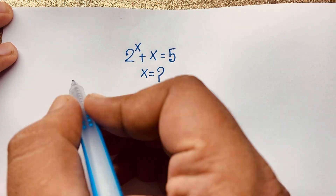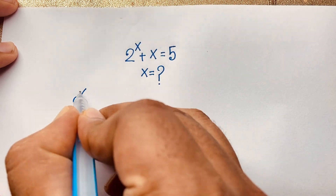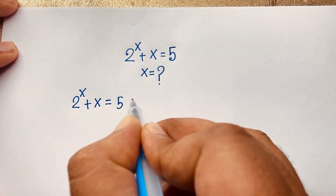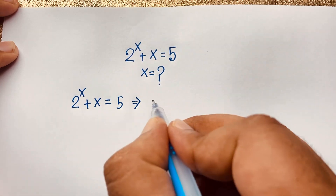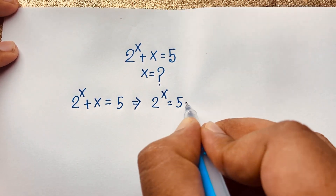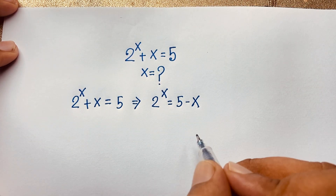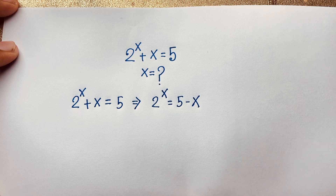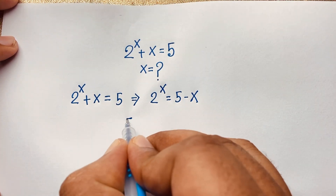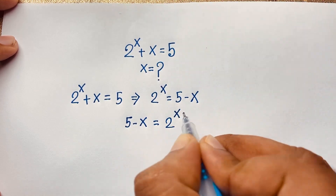In this math problem, our question is 2 to the power x plus x is equal to 5. Now I rearrange so that 2 to the power x is equal to 5 minus x — I move the x to this side so it becomes negative x. Now I consider this expression: 5 minus x is equal to 2 to the power x, just changing sides.